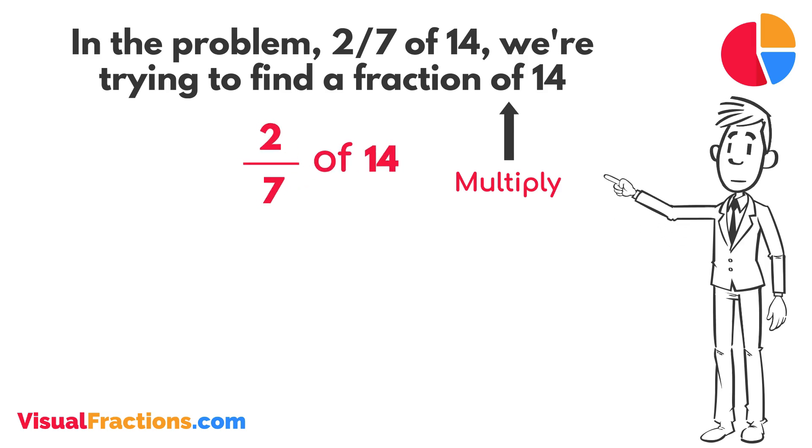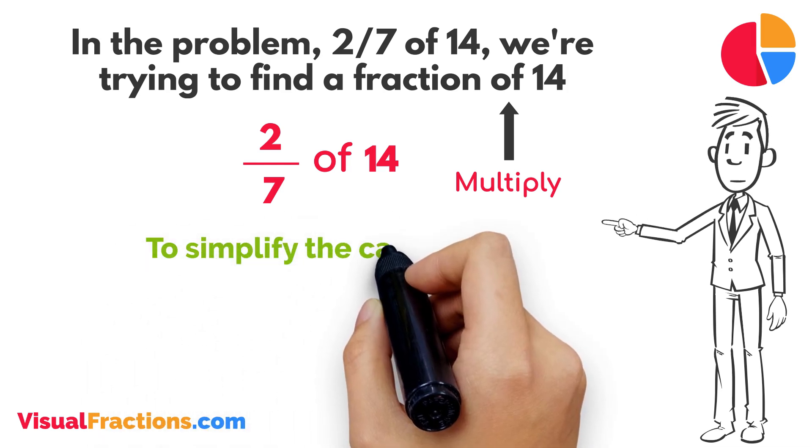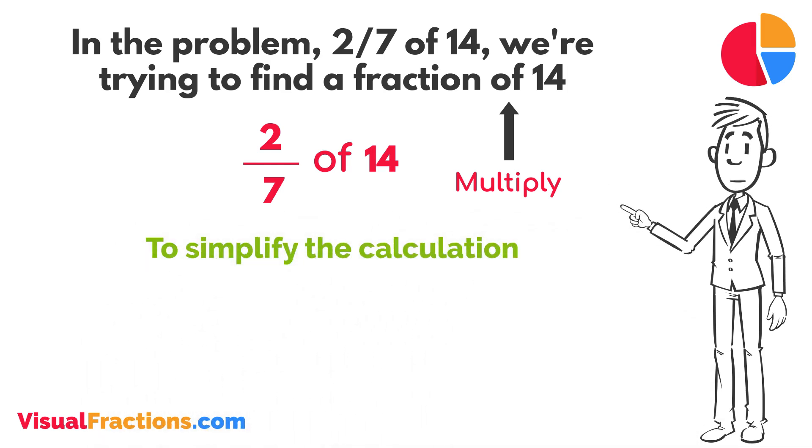To simplify the calculation, we first convert our whole number into fraction form, writing 14 as 14 over 1. This transformation makes it easier to work with our numbers as fractions.